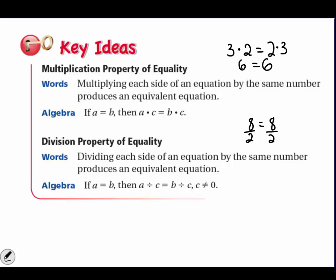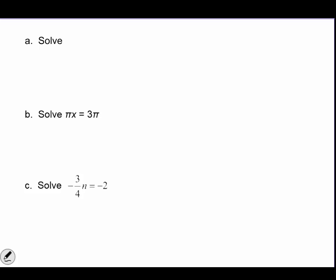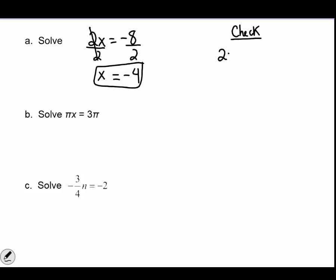Let's look at some examples. Example a: I identify the variable. A number next to a variable means multiplication, so the inverse operation is division. I write a division line under both sides and divide by 2. 2 divided by 2 is 1, and 1 times x is x. Negative 8 divided by 2 equals negative 4. To check, I write the original equation and substitute x with negative 4 in parentheses. 2 times negative 4 equals negative 8, which matches, so my answer is correct.